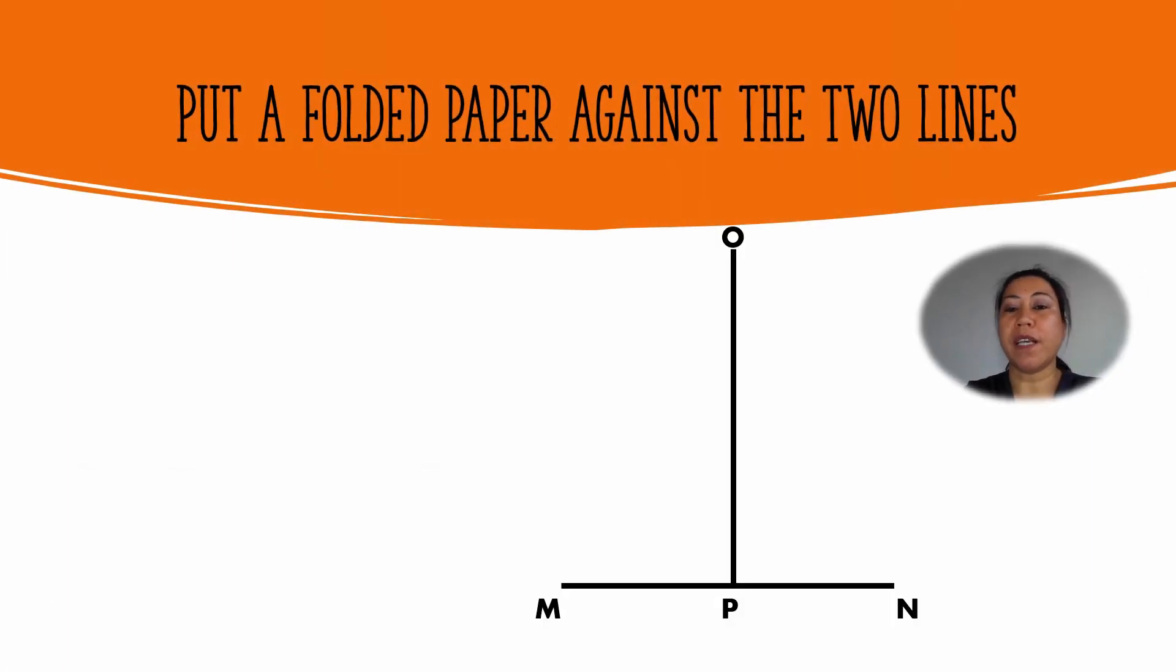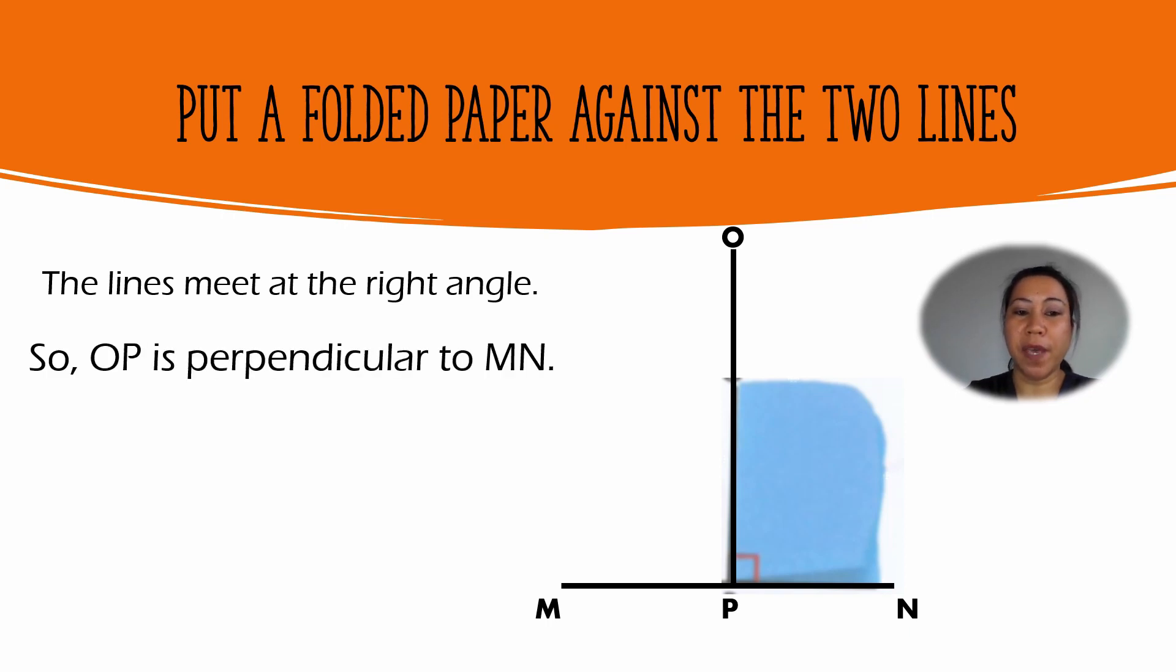And we can use this corner to check if the lines are perpendicular. Now put a folded paper against the two lines, line MN and line PO. The lines meet at the right angle. So line OP is perpendicular to line MN.